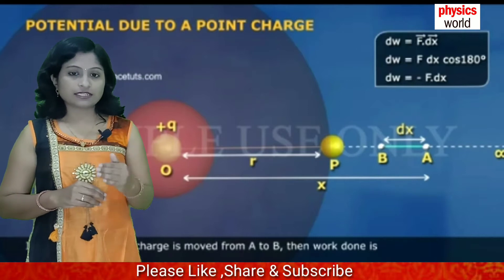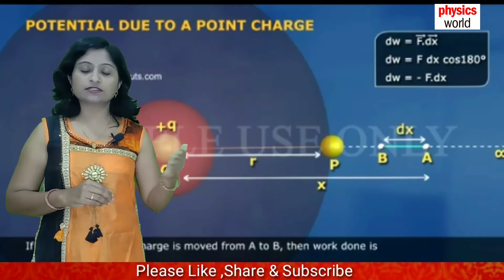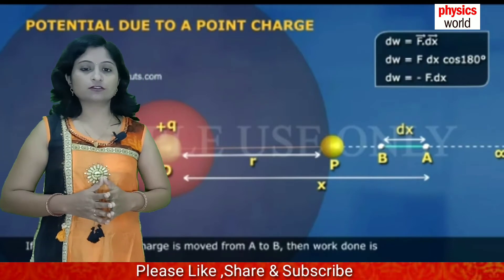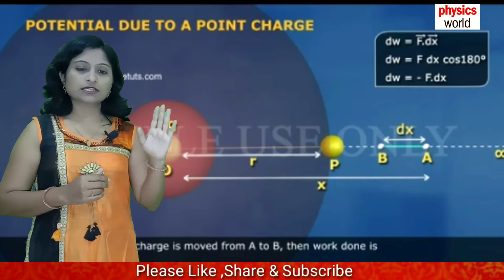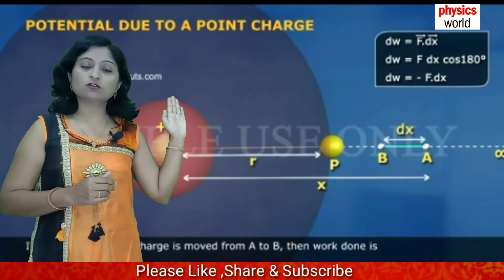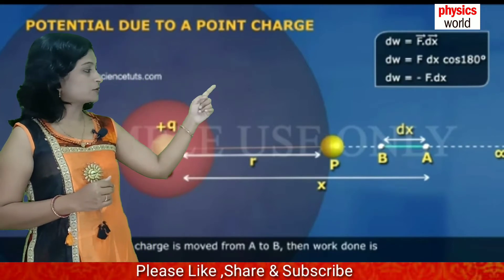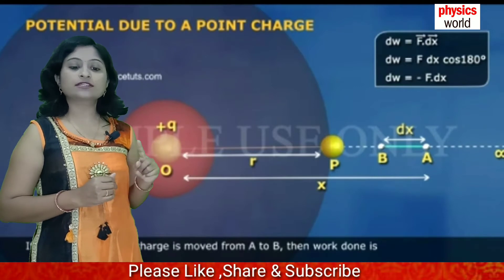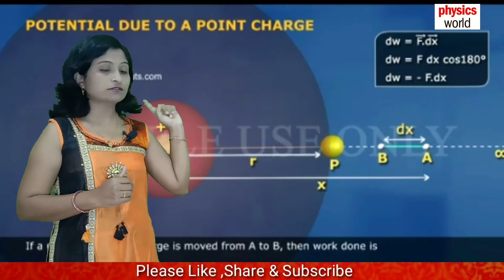We are bringing the test charge from infinity towards plus Q. Starting from the basic definition of work done — work done is force into displacement. Since two charges are present as shown in the diagram, we use Coulomb's electrostatic law. The formula is F = (1 / 4πε₀) × (Q × Q₀) / X², where X is the present distance between the charges.